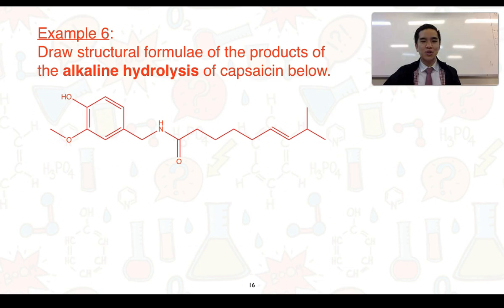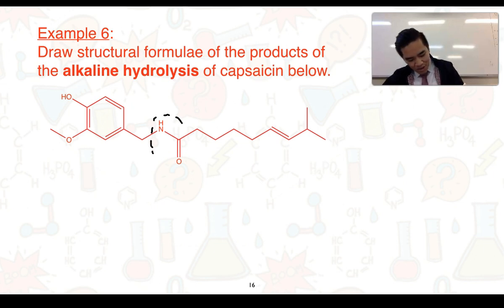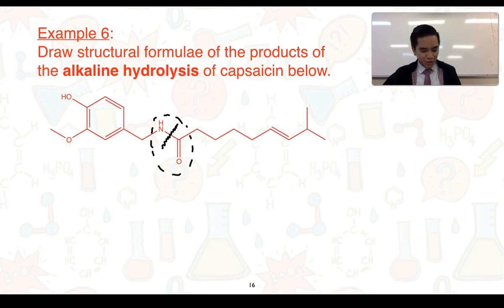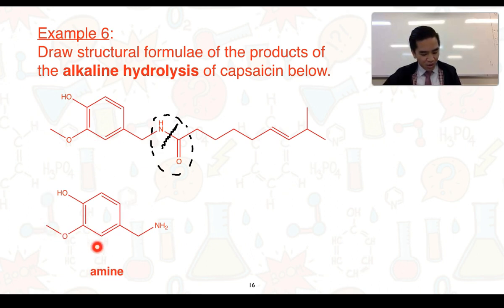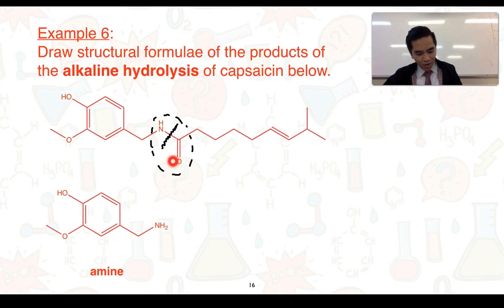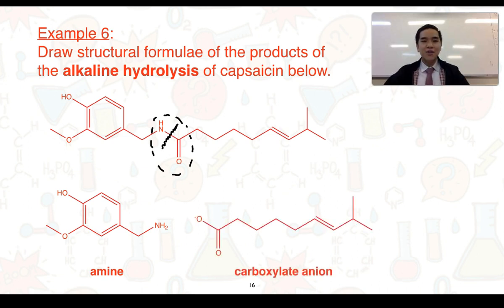For our final example, draw the structural formulae of the products of the alkaline hydrolysis of capsaicin, shown below. We identify the amide functional group and the carbon-to-nitrogen bond that will break. To the left, where the nitrogen is present, an amine forms — the rest of the molecule is unchanged, the nitrogen simply gains a hydrogen. To the right, the section with the C-to-O double bond forms a carboxylate anion. That concludes our work on 3.8 amides.